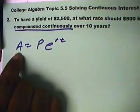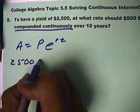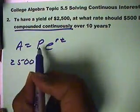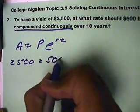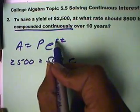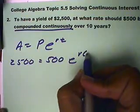We have a final amount of $2,500. P, the principal, which is the money that we initially put in, is $500. You have your base e. The interest rate r is not known, but the time is 10 years.